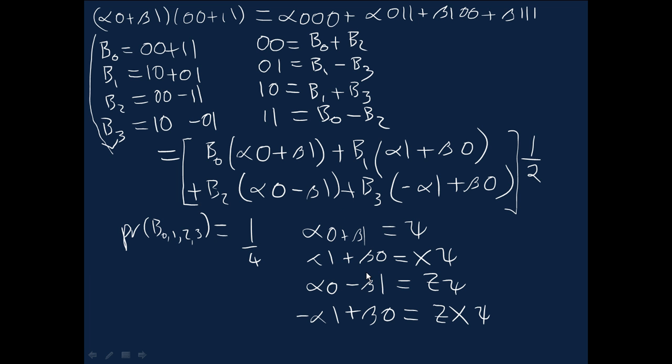So once Bob knows which of these four measurement outcomes he has, he knows the corresponding quantum state. It's just one of these four quantum states and he can recover the original quantum state psi just by applying the appropriate inverse operation. So in this case, if he gets this state, the XI, he can actually apply X inverse, which of course is X itself to recover the original state psi. And similarly here, and here for the other two bell basis measurement outcomes.